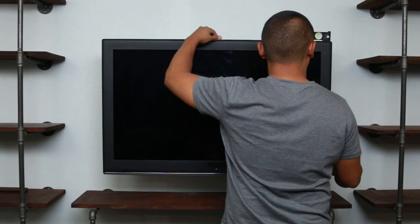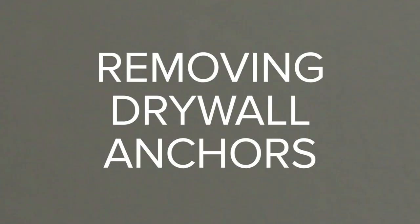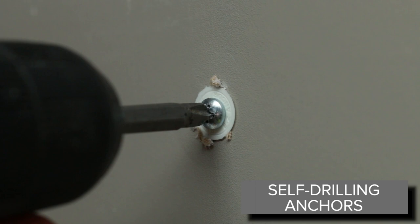As easy as it is to install an anchor, it's surprisingly easy to remove one. First, remove the screw from the anchor. Self-drilling screws are probably the easiest one to remove. All you have to do is unscrew it.